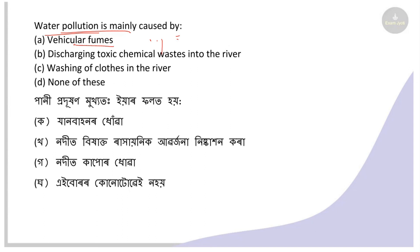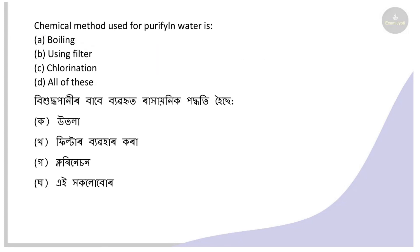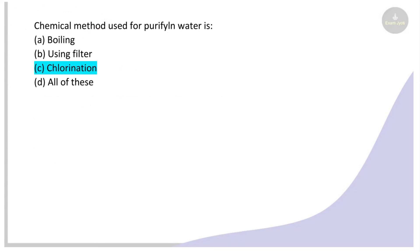Next: Water pollution is mainly caused by what? Options: vehicular emissions, discharging toxic chemical waste into rivers, washing of clothes in the river, none of these. The right answer is discharging toxic chemical waste into the river. Next: The chemical method used for purifying water is what? Options: boiling, filtration, chlorination, all of these. The right answer is chlorination — chlorine tablets are added for chemical purification.